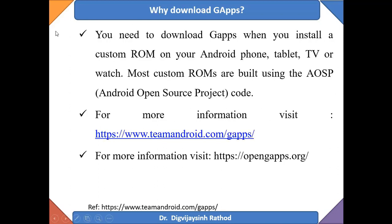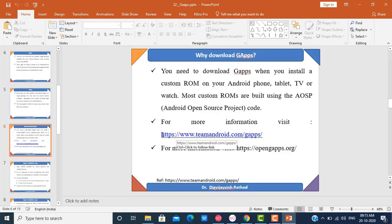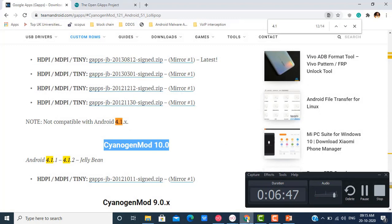You need to download GApps when you install a custom ROM on your Android phone, tablet, TV, or watch. Most custom ROMs are built using the Android Open Source Project code, so they don't include Google applications. For more information, I have provided two URLs: opengapps.org and teamandroid.com/gapps. You can visit either of these URLs to download the latest GApps. I have already opened both of these in the browser.